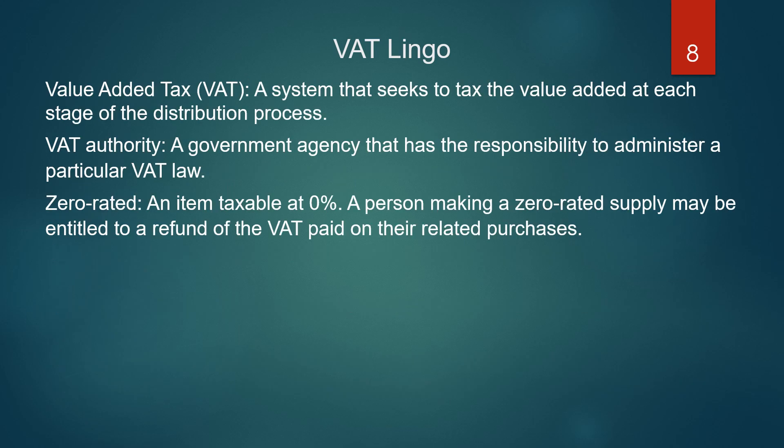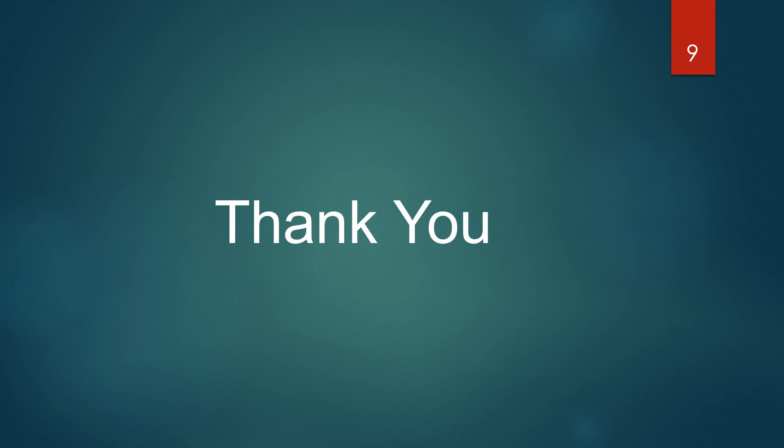Value-added tax, or VAT — we've already covered this at the beginning of this presentation. VAT authority: a government agency that has a responsibility to administer a particular VAT law. Zero rated: an item taxable at 0%. A person making a zero rated supply may be entitled to a refund of the VAT paid on their related purchases. Thank you for watching and we'll see you in the next presentation.